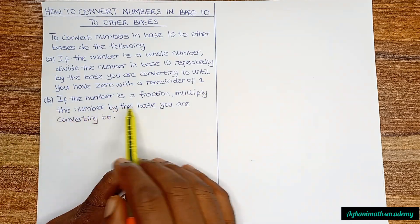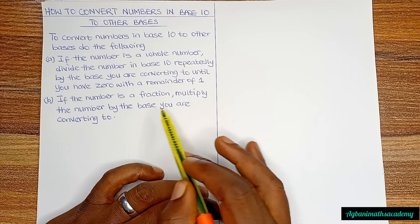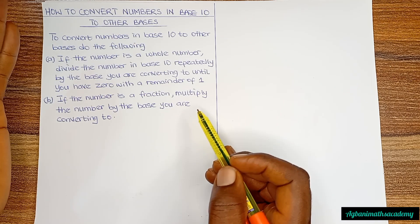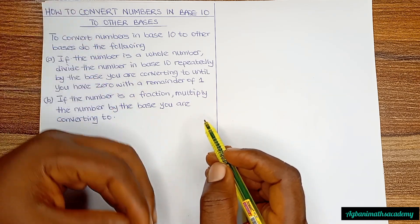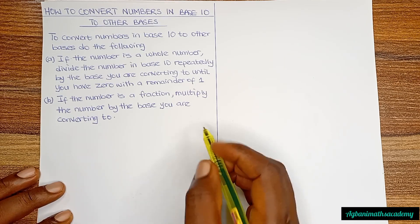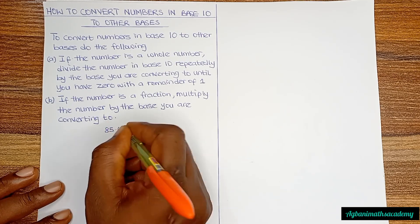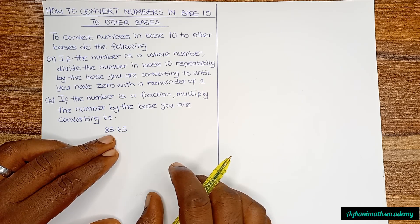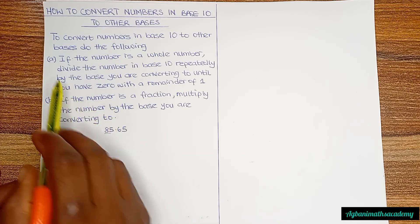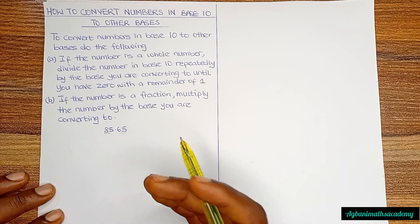B: if the number is a fraction — that means it is behind the decimal point — multiply the number by the base you are converting to. So if the number is a whole number in front of the decimal point you divide, but if it is a fraction behind the decimal point you multiply. For example, if you have 85.65 and you are converting from base 10 to base 8, you apply A to the values in front of the decimal and B to the values behind the decimal.